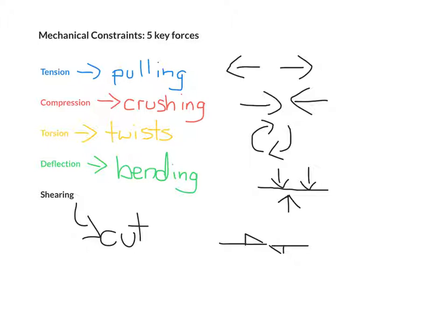And the reason why it looks like this is because whenever we're going to do shearing, we're actually cutting the material into two. So this is basically a key overview of our five constraints and what they are, what they do, and how to draw the symbols.